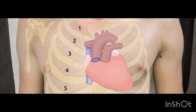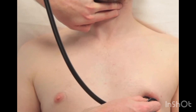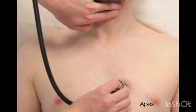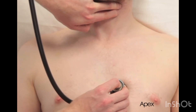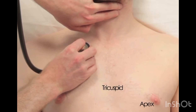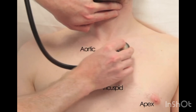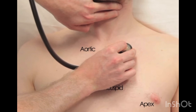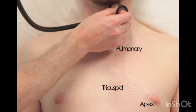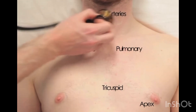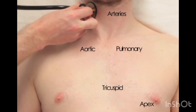We then move on to auscultate the valves. The aortic valve is at the 2nd ICS right sternal border, the pulmonary valve at the 2nd ICS left sternal border, and the tricuspid valve at the 4th ICS right sternal border. Palpate the carotid pulse and listen to each individual area looking for systolic and diastolic murmurs, starting with the apex where the mitral valve is, moving on to the tricuspid valve, then the aortic valve, and then the pulmonary valve. You can also listen to the carotid artery, working your way down, listening for any murmurs or whooshing sounds.